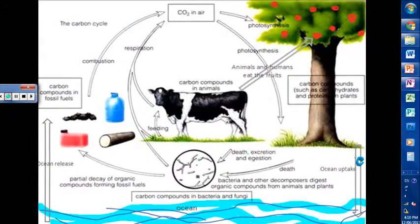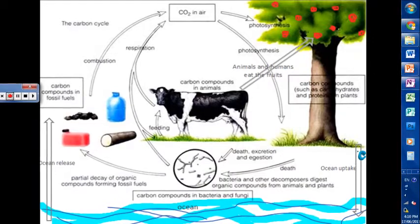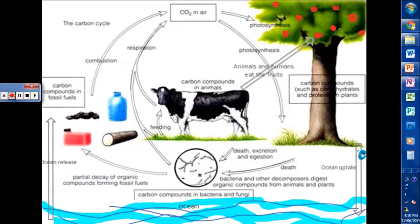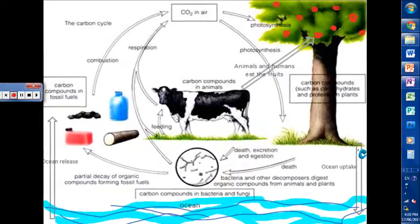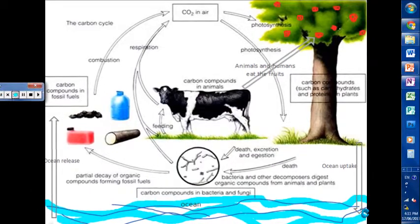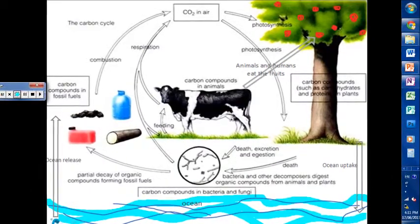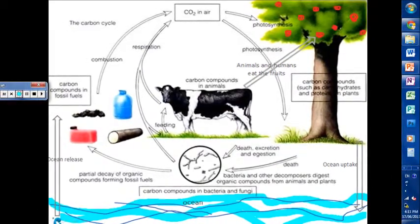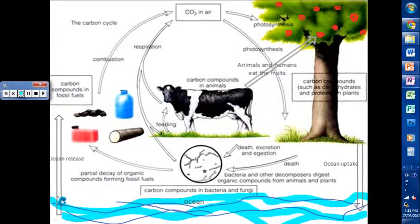Oceanic uptake is where the carbon dioxide is being absorbed into the ocean, or is in the ocean because of the decay of dead organisms. Oceanic release is where carbon dioxide is being released from the ocean.